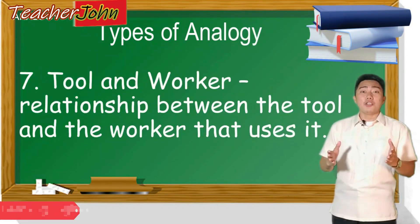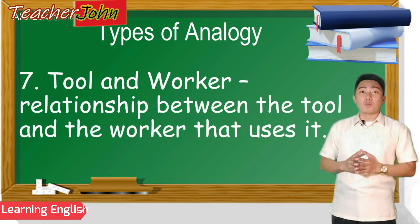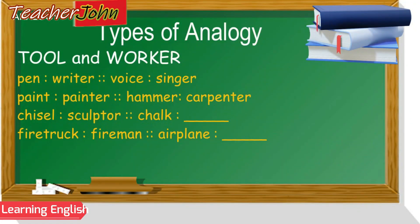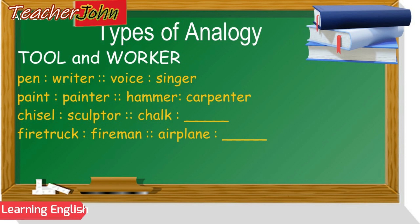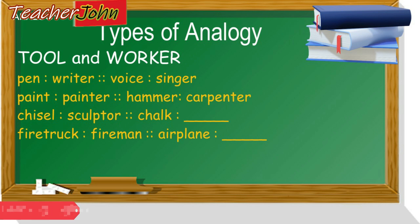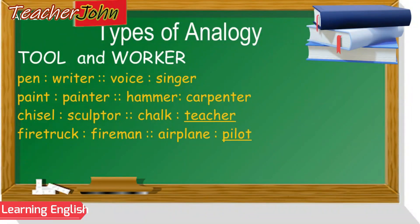This type of analogy shows the relationship between the tool and the worker that uses it. Read these examples with me: Pen is to writer as voice is to singer. Paint is to painter as hammer is to carpenter. Chisel is to sculptor as chalk is to teacher. And firetruck is to fireman as airplane is to pilot.